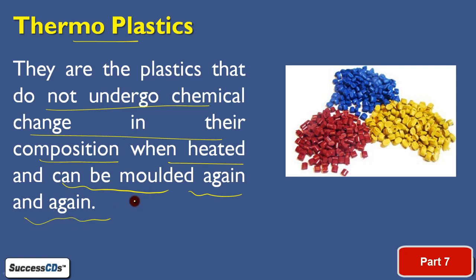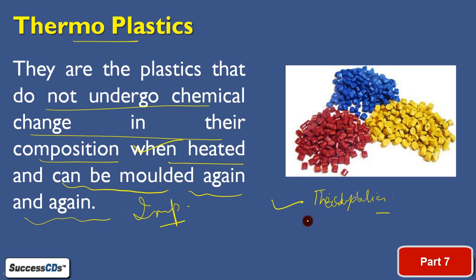Thermoplastics are those plastics in which, on heating, no chemical change occurs in their composition. You can heat and mold them again and again into different shapes and colors. As you can see in the figure, these are indicating thermoplastics. When they are heated, they do not undergo any kind of chemical change, and moreover they can be molded again and again.